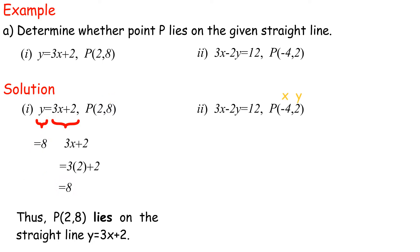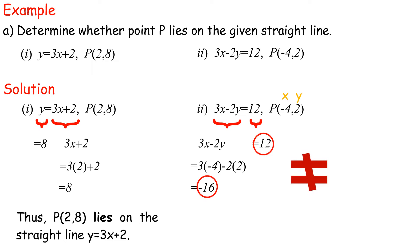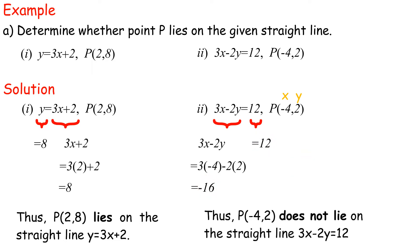2. 3x minus 2y equals 12, P(-4, 2). Left-hand side: 3 times negative 4 minus 2 times 2 equals negative 16. Right-hand side: 12. Both sides are not equal. Thus P(-4, 2) does not lie on the straight line 3x minus 2y equals 12.